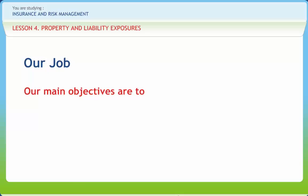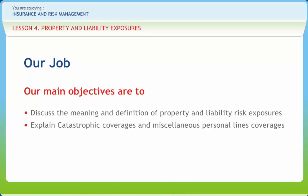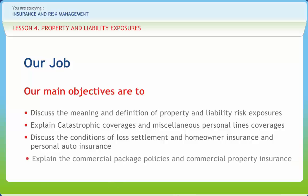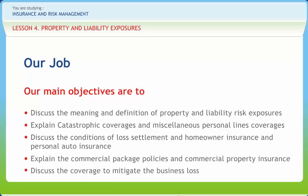After going through this presentation, you should be able to discuss the meaning and definition of property and liability risk exposures, explain catastrophic coverages and miscellaneous personal lines coverages, discuss the conditions of loss settlement and homeowner insurance and personal auto insurance, explain the commercial package policies and commercial property insurance, and discuss the coverage to mitigate the business loss.